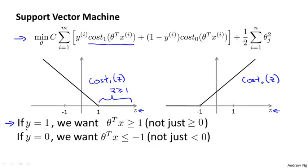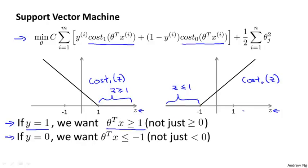In other words, if you have a positive example, we really want theta transpose x to be greater than or equal to one. And conversely, if y is equal to zero, the cost-zero-of-z function is only in the region where z is less than or equal to negative one that cost-zero-of-z is equal to zero.